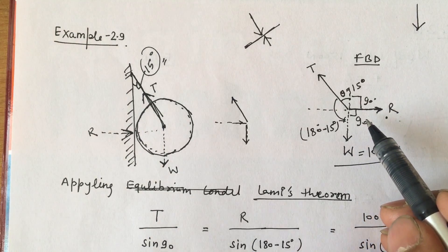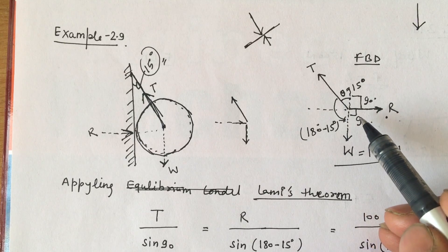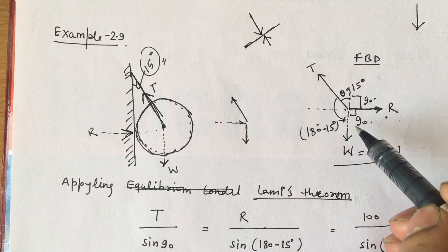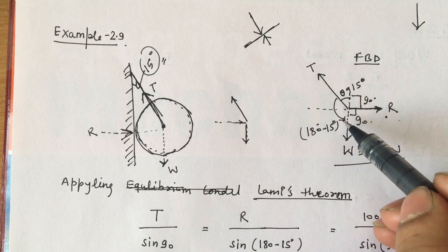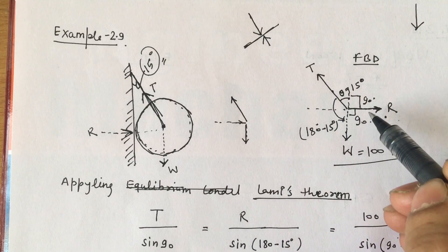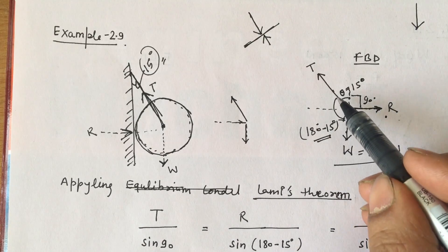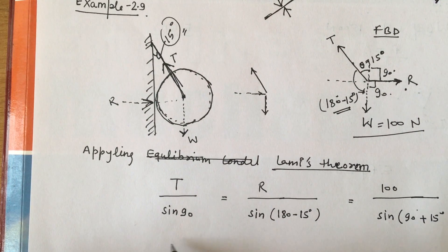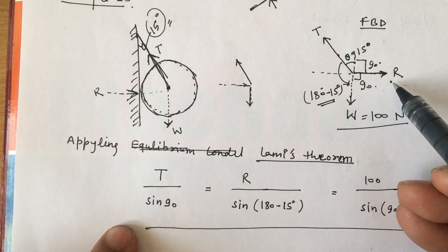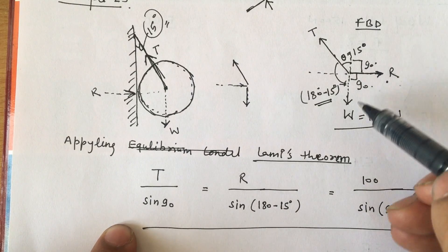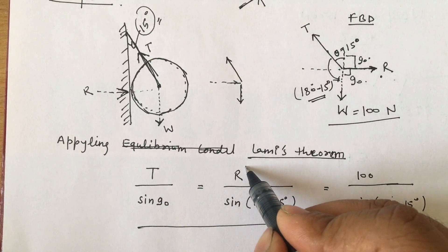Lamy's theorem states that if a body is in equilibrium under the action of three forces, each force is proportional to the sine of the angle between the other two forces. So we can write: T divided by sin 90 equals R divided by sin(180 minus 15) equals 100 divided by sin(90 plus 15). Here R and T are the unknowns and 100 Newton is the known parameter.